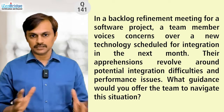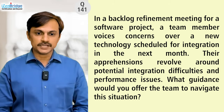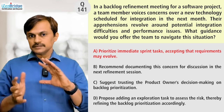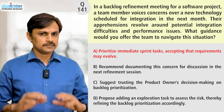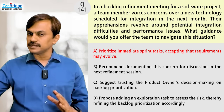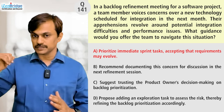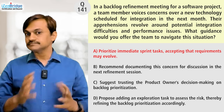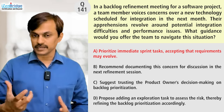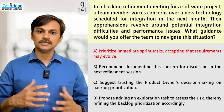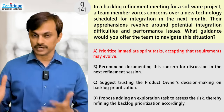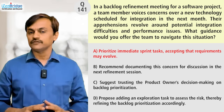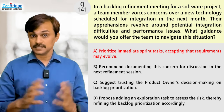Option A: prioritize immediate sprint tasks, accepting that requirements may evolve. This option is saying to focus on your current sprint, since the question indicates the risk will come in the next month — maybe two sprints away. However, in agile we still need to do risk management and not ignore things that can go wrong in future iterations. So Option A is not a candidate.